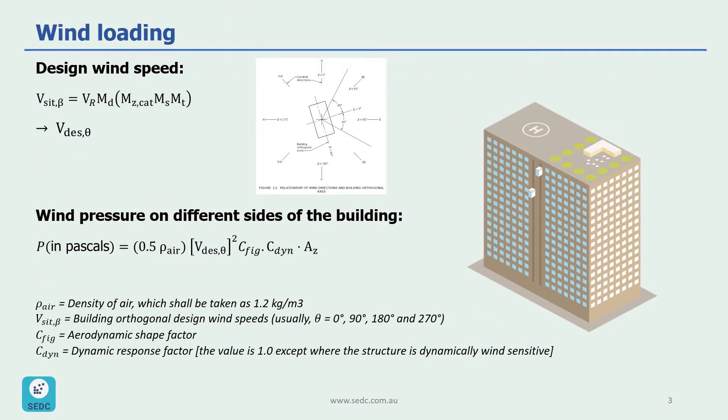Our first step to measure wind actions on this building is to calculate design wind speed or V_design,θ. Theta is shown in this picture in here, which shall be taken as the maximum cardinal direction site wind speed or V_site,β, which is shown in here, linearly interpolated between cardinal points within a sector plus and minus 45 degrees to the orthogonal direction being considered.